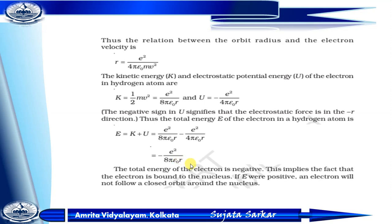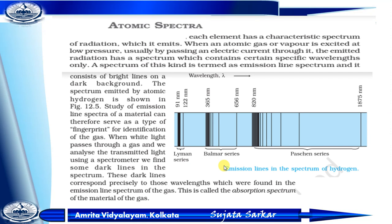Each and every element has a characteristic spectrum of radiation. When an atomic gas or vapor is excited at low pressure — usually by passing electric current through it — it emits radiation. This spectrum contains only certain specific wavelengths.